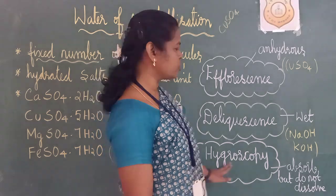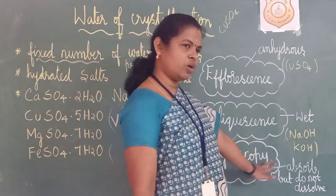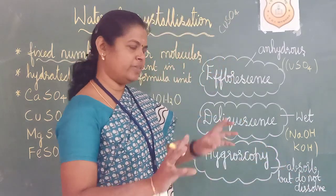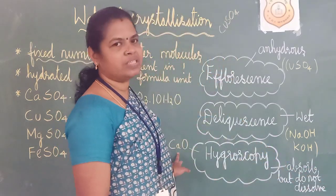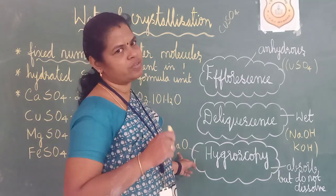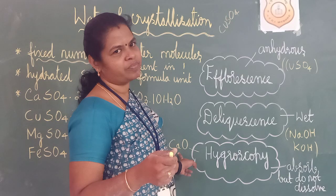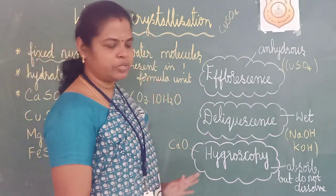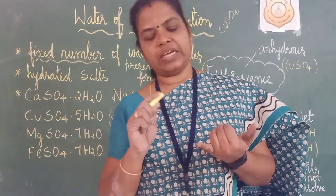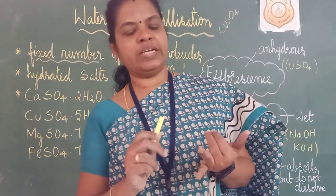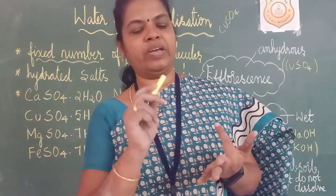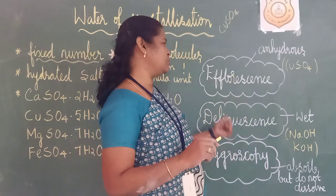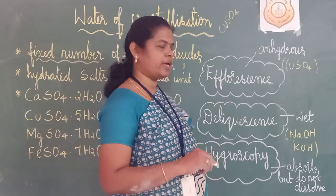The third term is hygroscopy. These types of salts absorb moisture from the atmosphere but do not dissolve — they absorb and stay as they are. For example, CaO — check whether that is quicklime or slaked lime. So this is the final part of this chapter. We have studied water of crystallization: its definition, why it is called hydrated salt, examples, and the three terms — efflorescence, deliquescence, and hygroscopy.